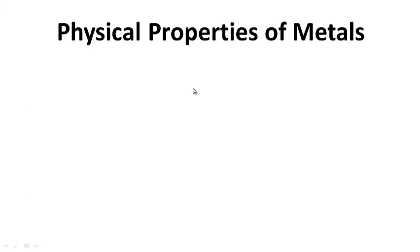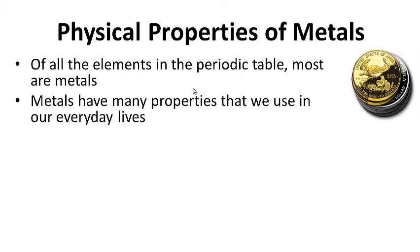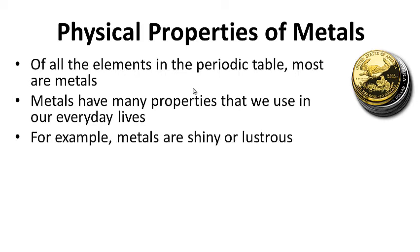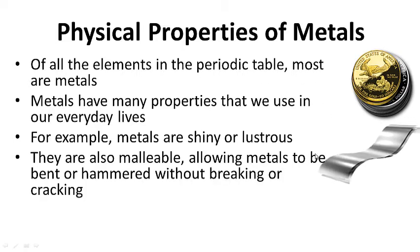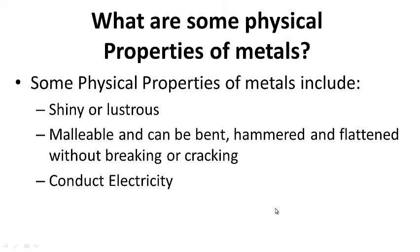Physical properties of metals. Of all the elements in the periodic table, most are metals. Metals have many properties that we use in everyday life. We use them as money, and you can see that money is shiny or lustrous. Metals are also malleable — they can be bent or hammered without breaking or cracking. Metals also conduct electricity, which is used in many electronic products. For your notes: what are some physical properties of metals? Question on the left-hand side, answer on the right-hand side. Go ahead and pause.